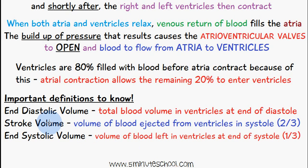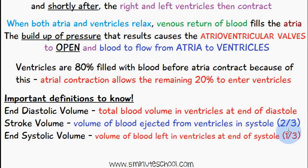Here are some important definitions. End diastolic volume is the total blood volume in the ventricles at the end of diastole — the end of the relaxation phase. Stroke volume is the volume of blood ejected from the ventricles during systole; only two-thirds of the blood in the ventricles is ejected. End systolic volume is the volume of blood remaining in the ventricles at the end of systole — that one-third which is not ejected.